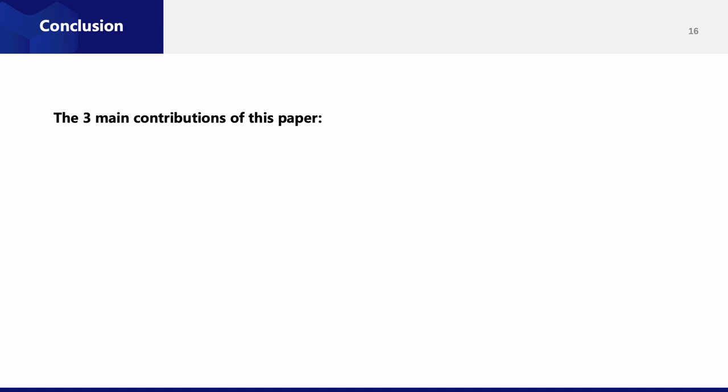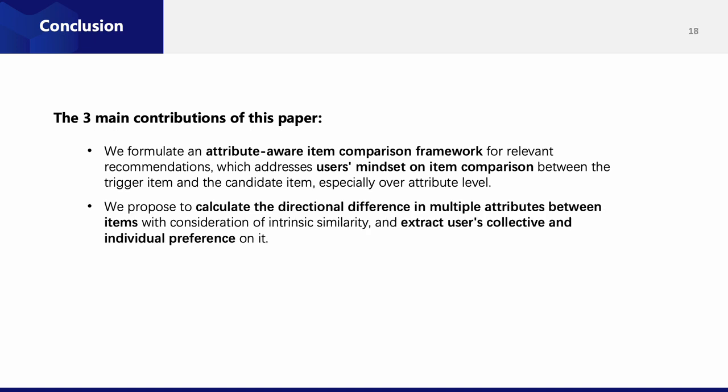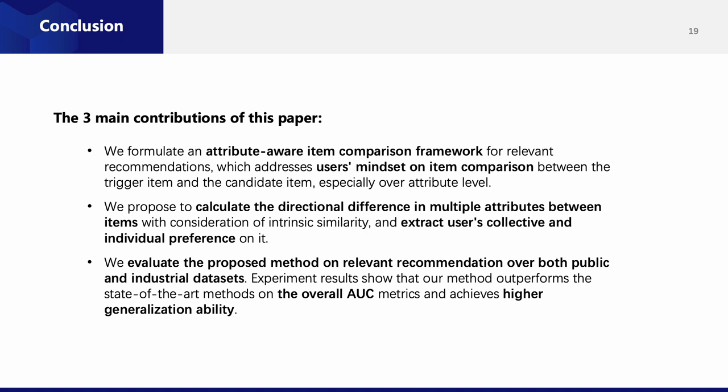Above all, there are three main contributions in our paper. Firstly, we formulate an attribute-aware item comparison framework for relevant recommendations, which addresses users' mindset on item comparison between trigger item and the candidate item, especially at the attribute level. Secondly, we propose to calculate the directional difference in multiple attributes between items with consideration of their intrinsic similarity, and extract users' collective and individual preferences on it. Thirdly, we evaluate our methods on relevant recommendation over both public and industrial datasets. Experiment results show that our methods outperform state-of-the-art methods on overall AUC metrics and achieve higher generalization ability.